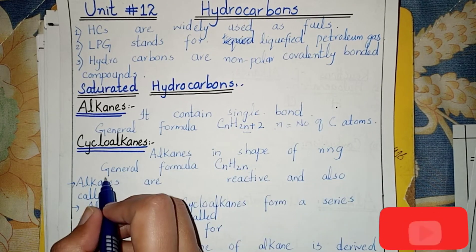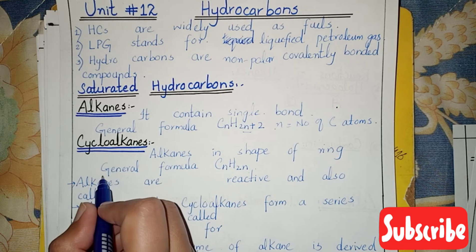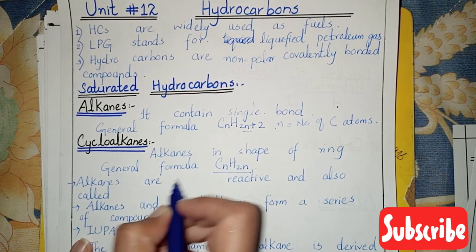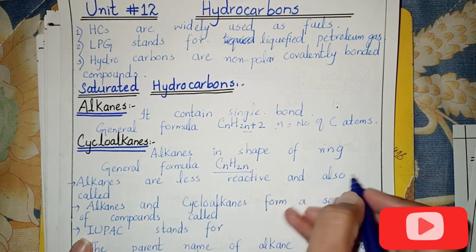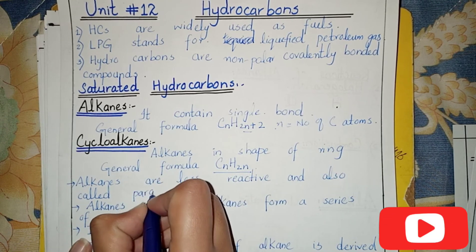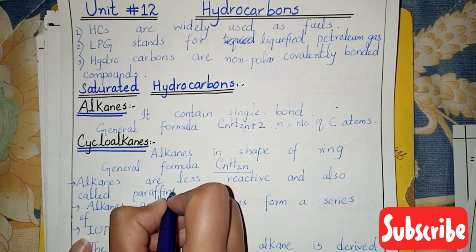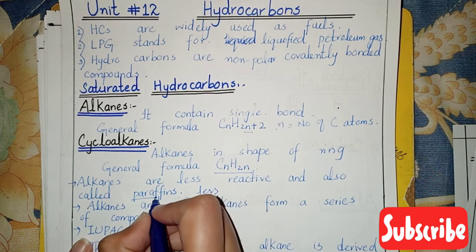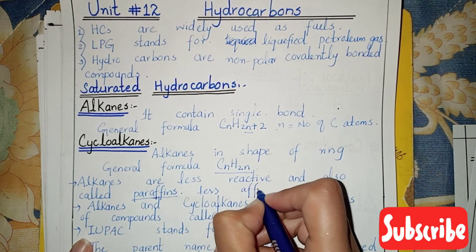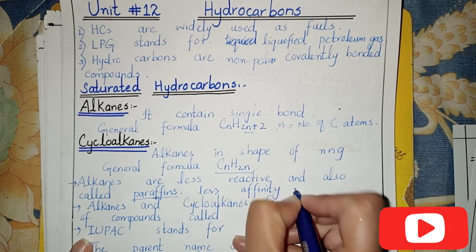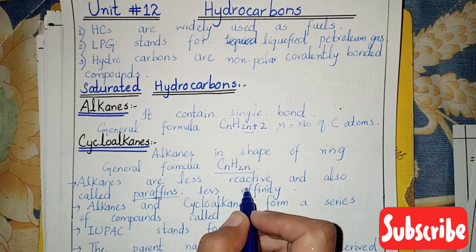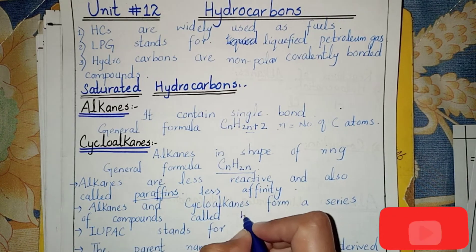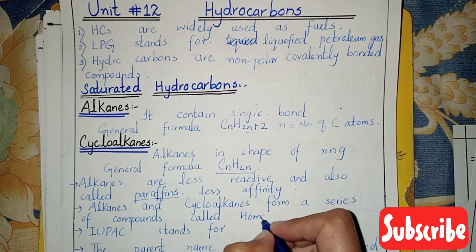Alkanes in the shape of a ring are called cycloalkanes. The general formula of cycloalkane is CnH2n. Alkanes are less reactive and are also called paraffins. Para means less and affins means affinity. As they have single bonds, they are less reactive. Alkanes and cycloalkanes form a series of compounds called a homologous series.